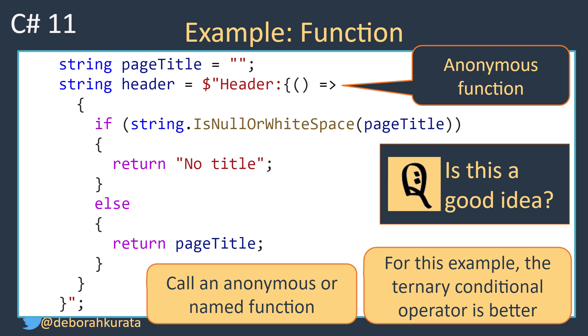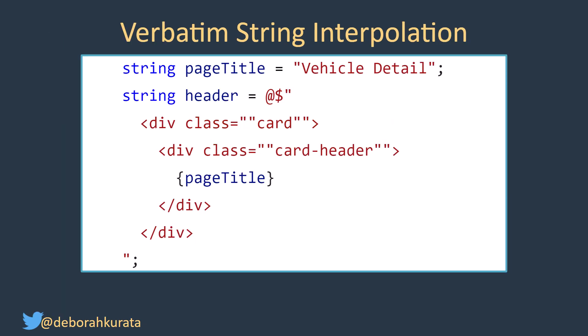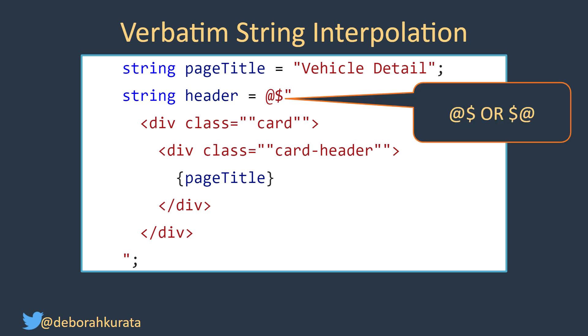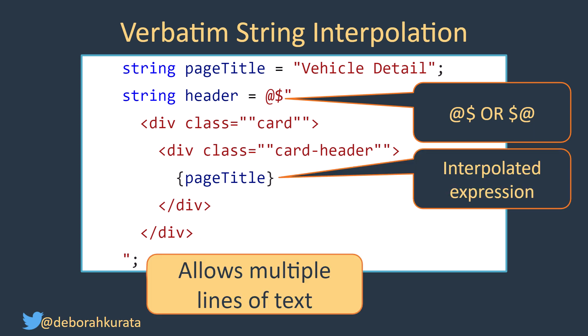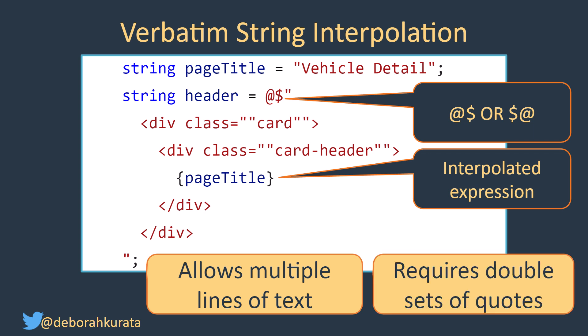Putting too much code inside of an interpolation expression makes that code hard to debug and test. We can combine string interpolation with verbatim strings using at-dollar or dollar-at. That way, we can have multiple lines of text and optionally multiple lines for our interpolation expression, though in this example we only have one line. But since it's a verbatim string, we again need double quotes for any embedded quotes.